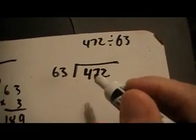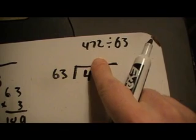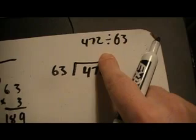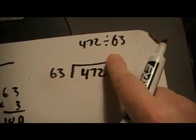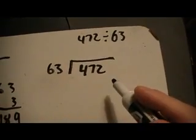Dividend, and can 63 go into 4? Nope, can 63 go into 47? Nope, can 63 go into 472? Well, yeah, but now I'm starting from square one.